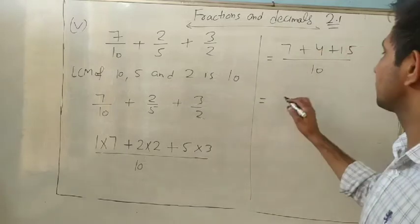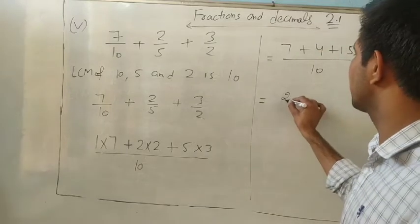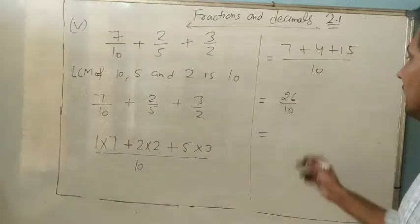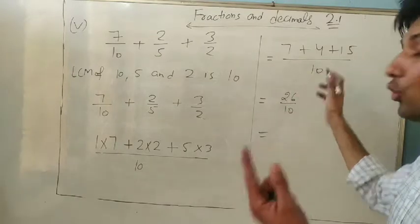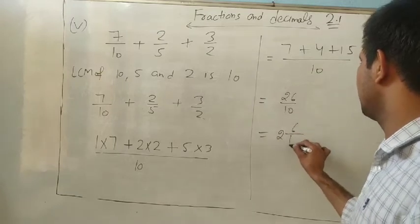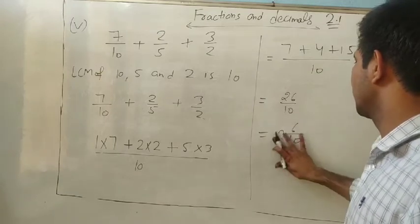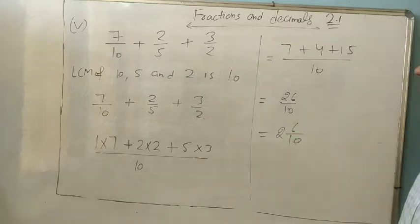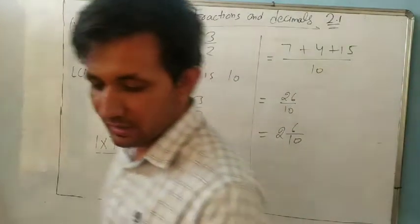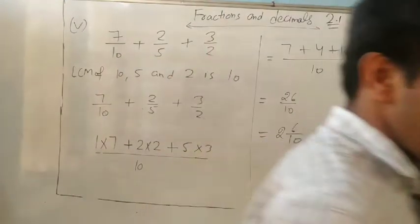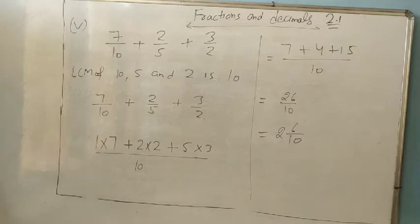To convert 26/10 to a mixed fraction: 10 goes into 26 twice (20), remainder is 6. So the answer is 2 and 6/10. Parts two, three, and four of question one you will do yourself.